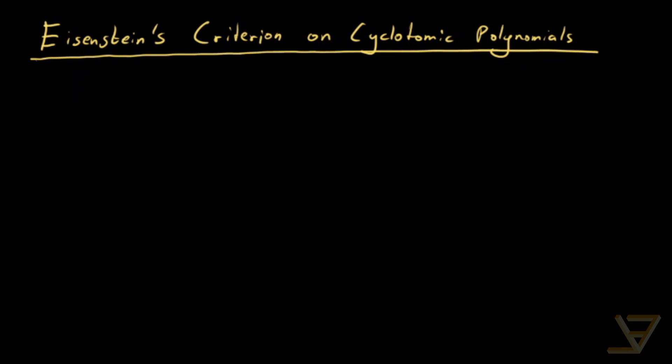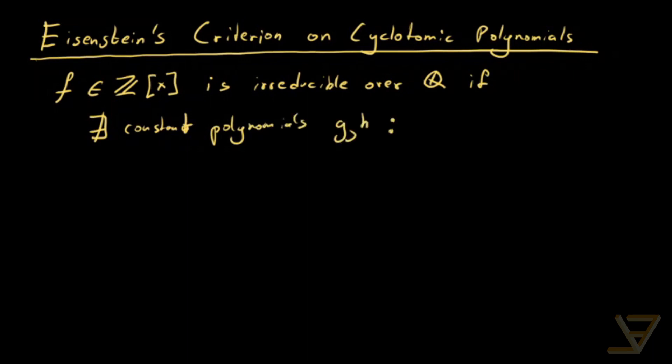We'll start with the definition of irreducibility. Let's say f is a polynomial with integer coefficients. This polynomial is irreducible over the rational numbers if there do not exist non-constant polynomials g and h such that f equals gh, where g and h are polynomials with rational coefficients.